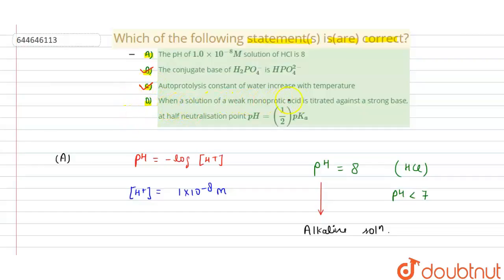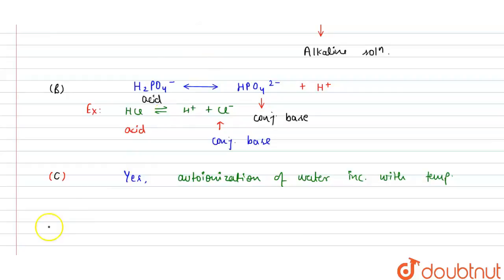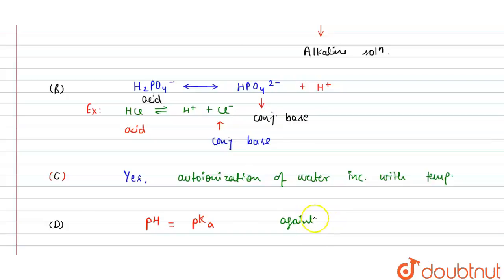For option D: when a solution of a weak monoprotic acid is titrated against a strong base, at the half-neutralization point, pH equals half pK. This is wrong. The correct formula, which is directly NCERT-based, is pH = pKa at the half-neutralization point when titrated against a strong base. So option D is incorrect.